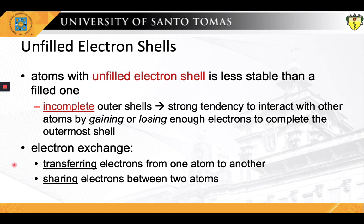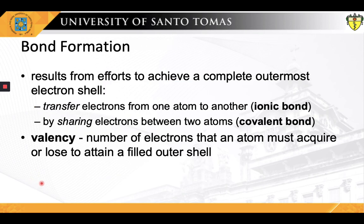This electron exchange can be achieved either by transferring electrons from one atom to another, or by sharing electrons between two atoms. Atoms can attain a more stable arrangement of electrons in their outermost shell by interacting with one another — remember the octet rule. This interaction involving a transfer of one or more electrons from one atom to another leads to the formation of an ionic or electrostatic bond.